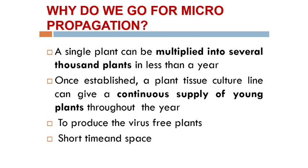Why do we go for micropropagation? A single plant can be multiplied into several thousands of plants in less than a year. Once established, plant tissue culture lines can give a continuous supply of young plants throughout the year. Micropropagation also produces virus-free plants — especially important for banana, since most banana plants are affected by the bunchy top virus. It also saves time and space.